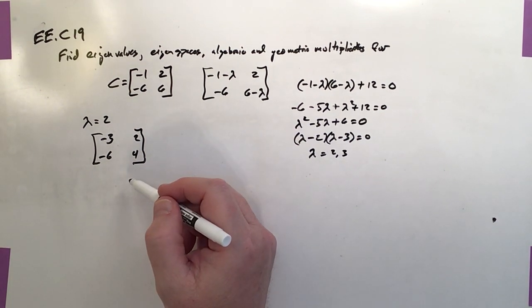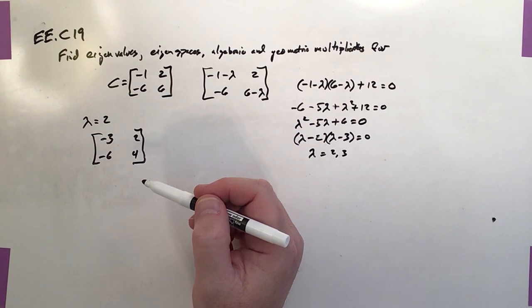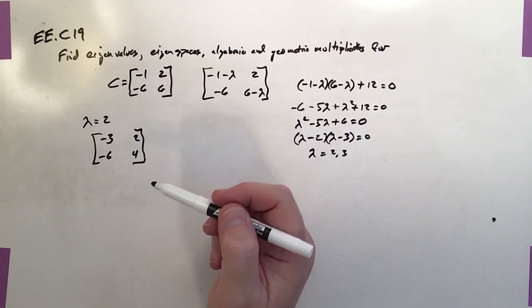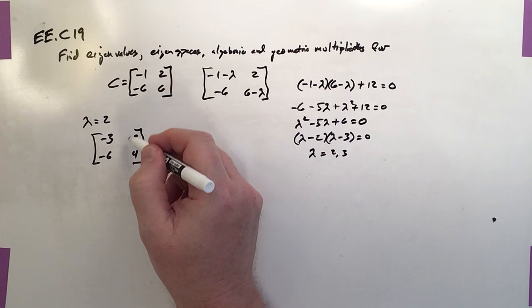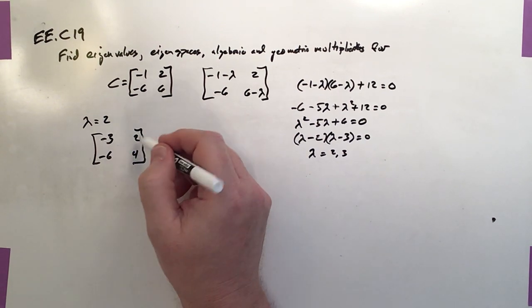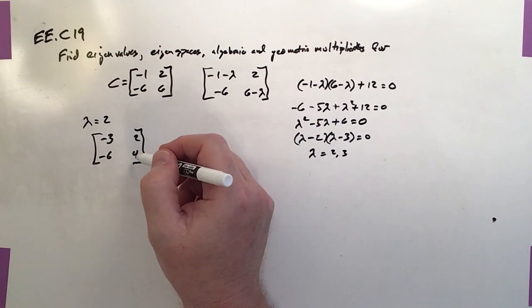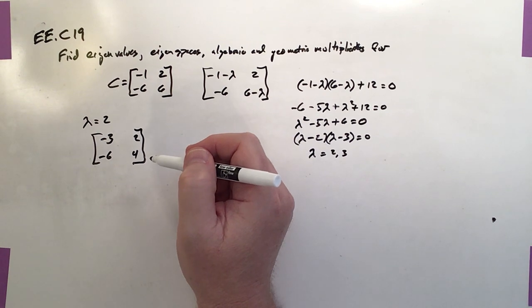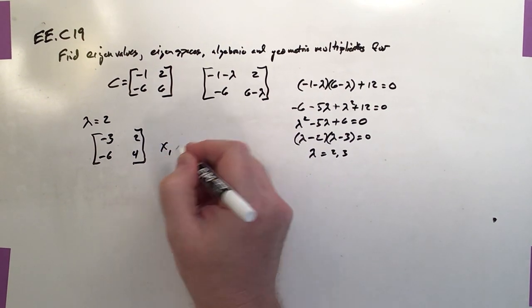And what we're looking for is the null set of this particular matrix. This one I can do by inspection, and we can do that because notice both these vectors are in a 2 to 1 ratio. So I know I can reproduce this vector set with simply 1 and 2.